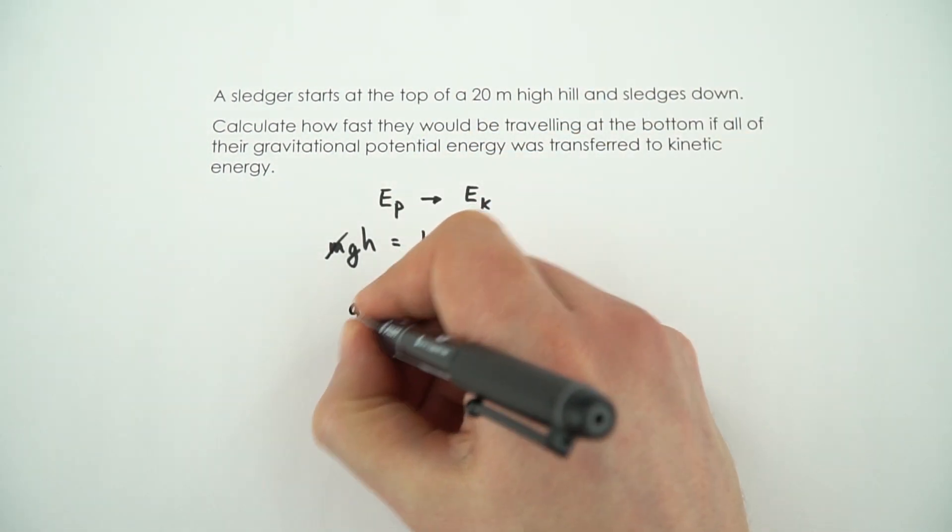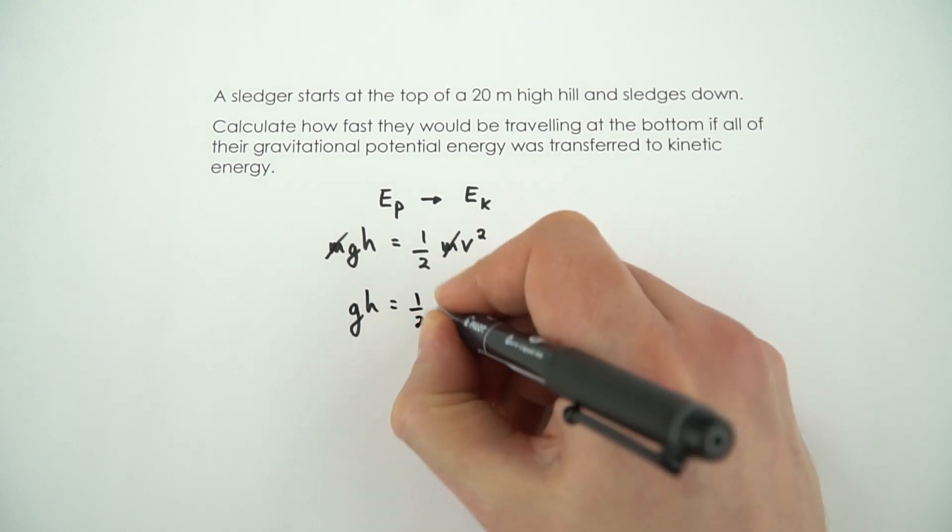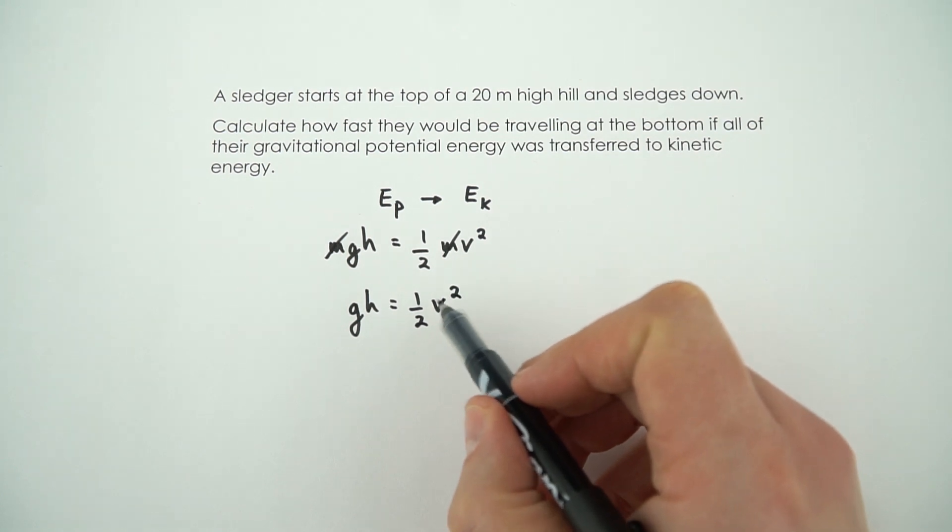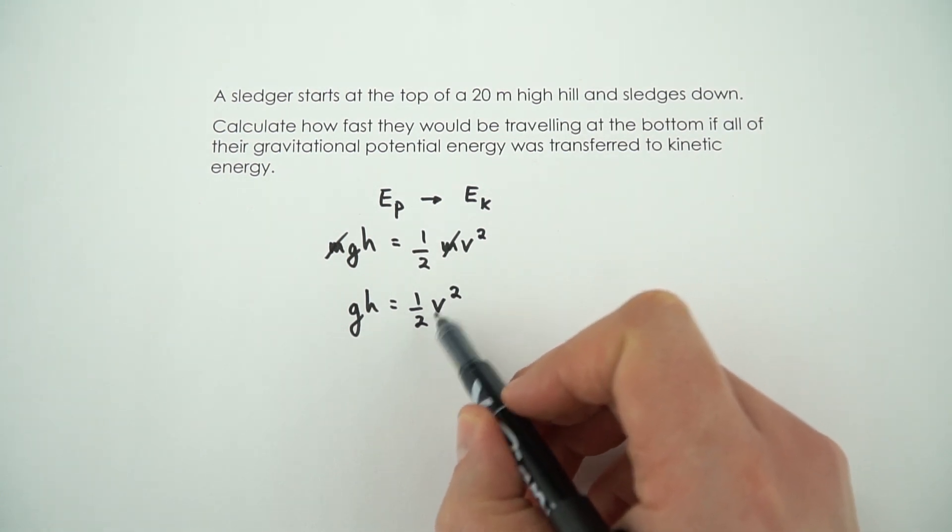We can then say that gh is equal to a half v squared. And remember what we're trying to do is work out the final speed, and therefore we want to get v on its own.